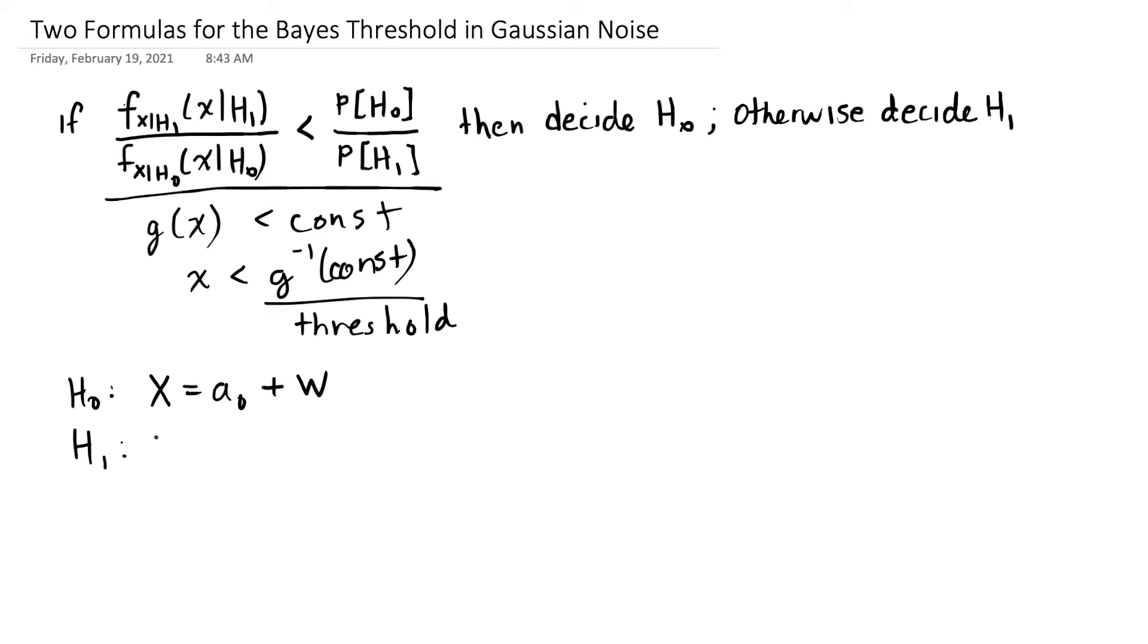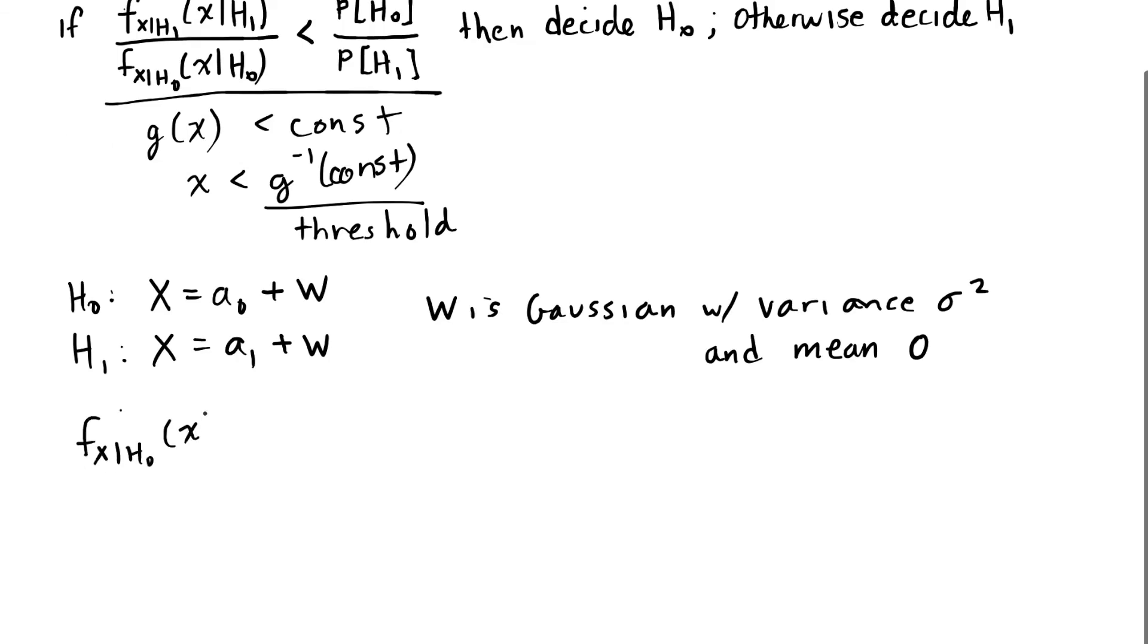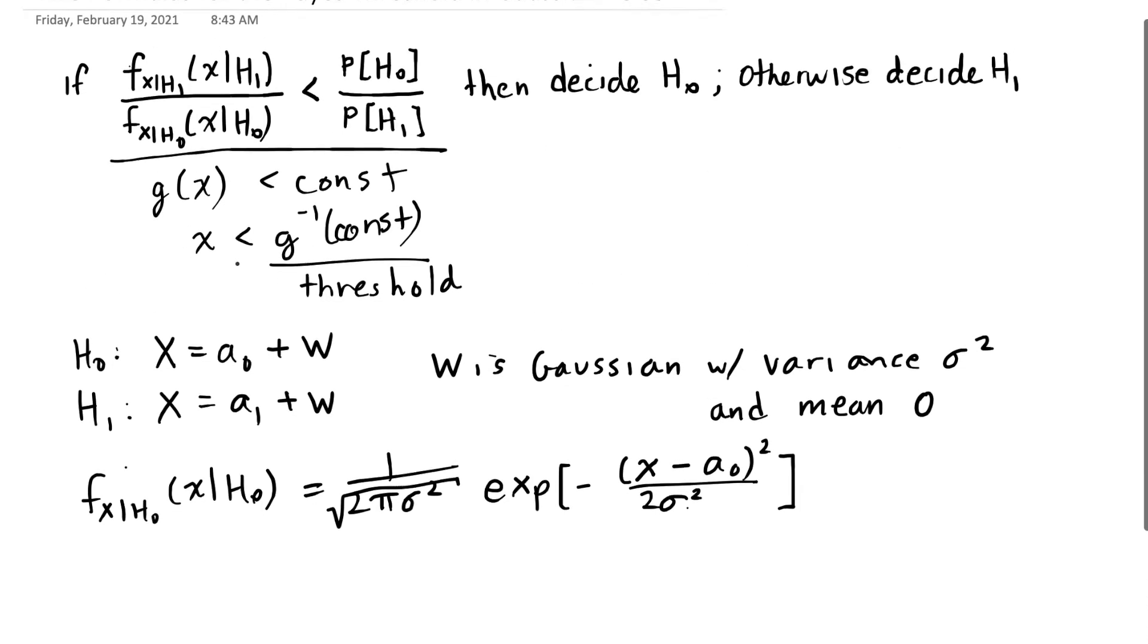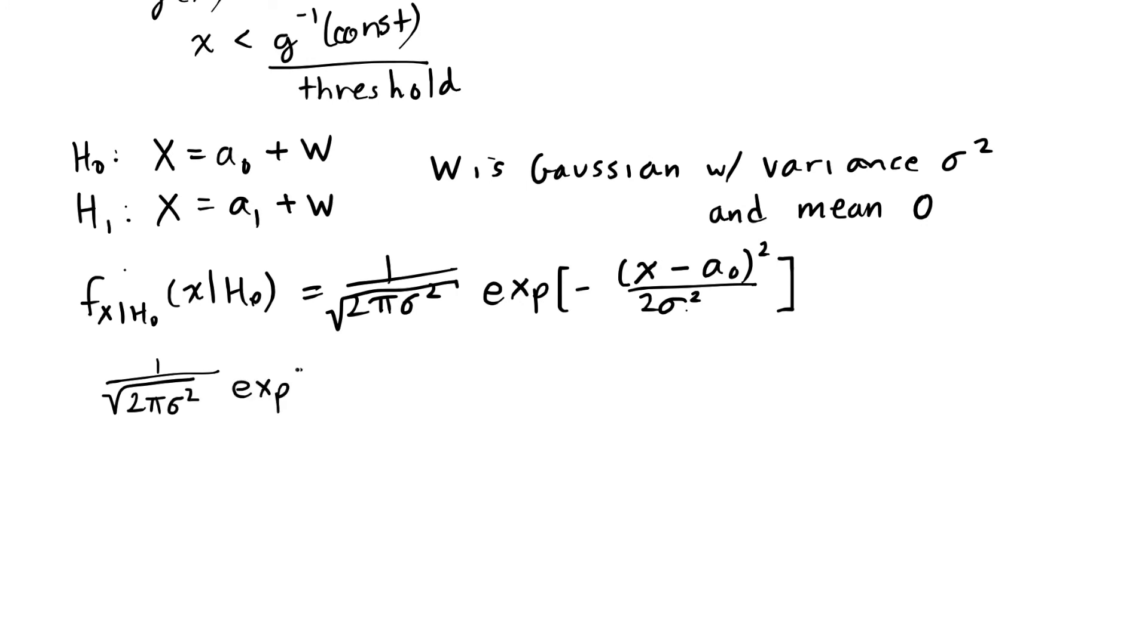When I say that w is Gaussian, that means that my conditional probability density function for x given h0 is the Gaussian distribution. So the conditional probability density function of x given h1 is equal to the Gaussian bell-shaped curve, and I'm going to get an a1 here as the mean of x. Both of these functions then go in this fraction, and I'm going to have to work that out.